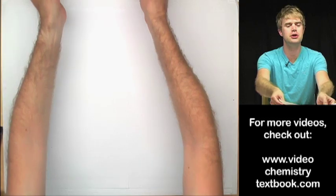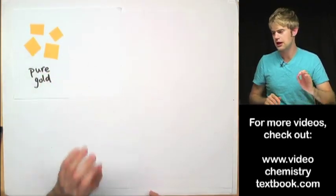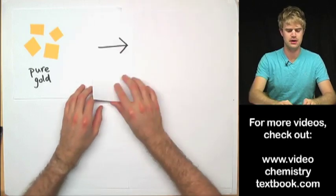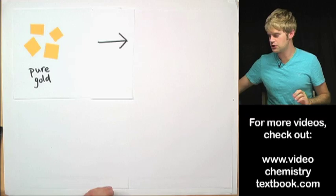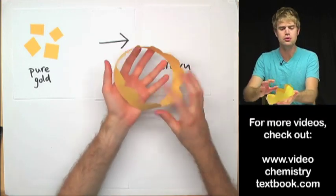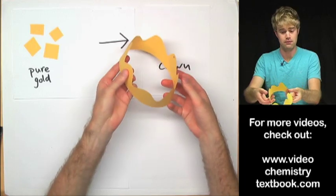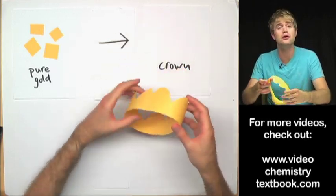So he takes some pure gold that he owns and he takes the gold pieces down to the goldsmith and he says, make me a new crown. The goldsmith takes the gold and a couple days later delivers a beautiful new crown. King Hiro loves it. He puts it on, he's like, I look baller in this thing.